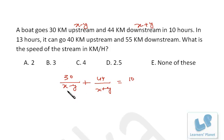Similarly, 40 kilometer upstream and 55 kilometer downstream, and the total time is 13 hours. Now you need to solve these two equations. These are simultaneous equations. You can assume the values of x minus y and x plus y and then you can solve.